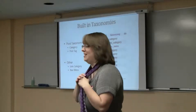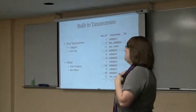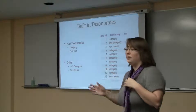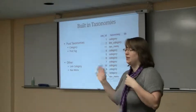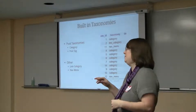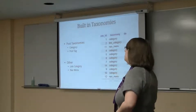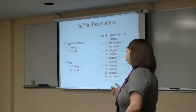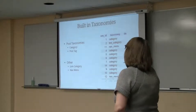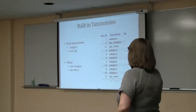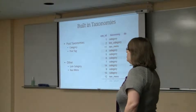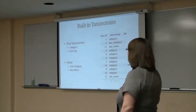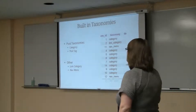Here are your built-in taxonomies. This is what comes pre-installed with WordPress. And again, this is the same thing with Drupal, Expression Engine, and other content engine systems — they don't come with these, you have to create them. But WordPress comes with built-in taxonomies, which are by default only used for posts: your categories and your tags.